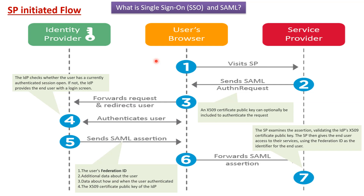The sixth step is the user's browser forwards the SAML assertion to the service provider. The seventh step is the service provider examines the assertion and validates the IDP's X.509 certificate public key. If it is valid, the service provider gives the end user access to their services using the federation ID as the identifier for the end user.